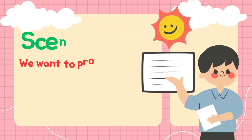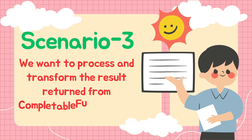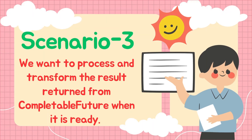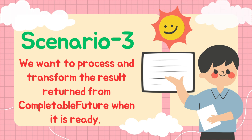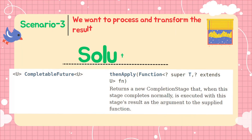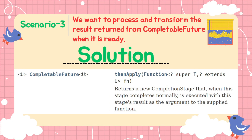Suppose we want to process and transform a result returned from a CompletableFuture when it is ready — in that case we can use thenApply(). It takes a functional interface Function as an argument. This interface represents a function that accepts an argument of type T and produces a result of type R.